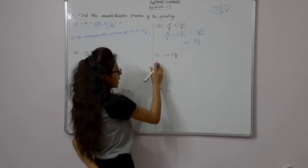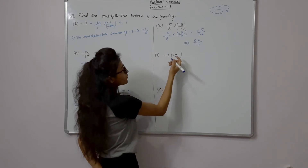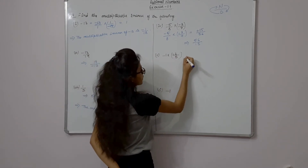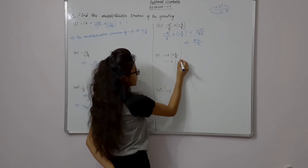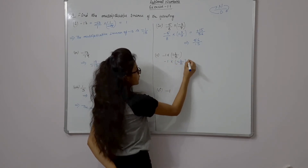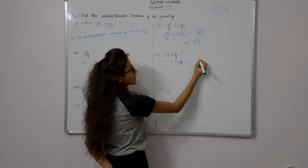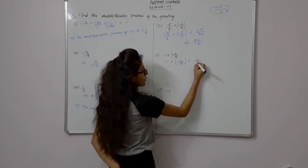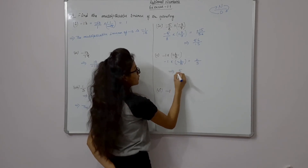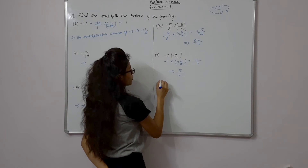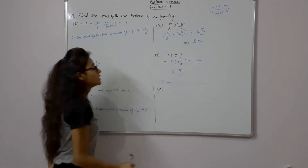Now fifth part: minus 1 into minus 2 upon 5. Minus times minus becomes plus, 1 into 2 is 2, so we get 2 upon 5. Its multiplicative inverse is 5 upon 2. Don't forget to write the concluding line.